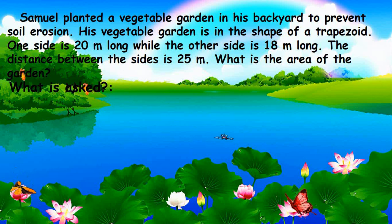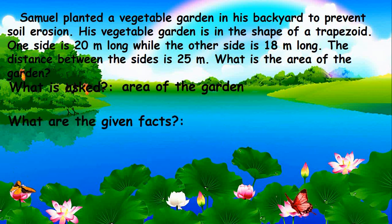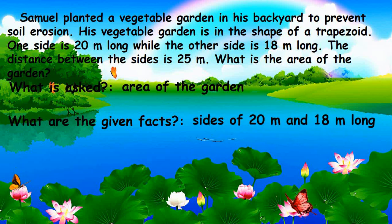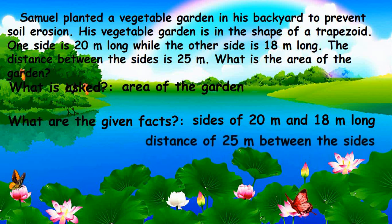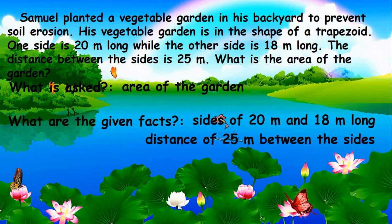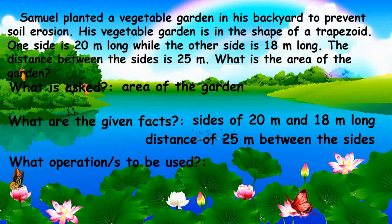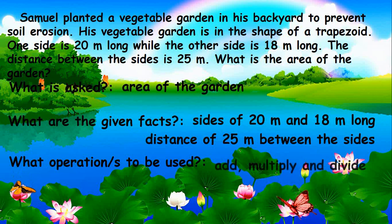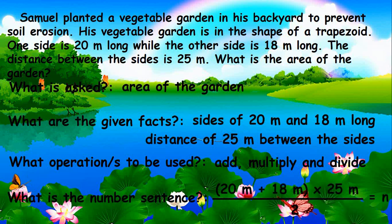Let's answer the following questions. What is asked in the problem? It asks what the garden area is. Second, what are the given facts? They are the sides of 20 meters and 18 meters long, and the distance of 25 meters between the sides. Next, what operation or operations are to be used? This is the formula for getting the area of the trapezoid, which involves addition, multiplication, and division.